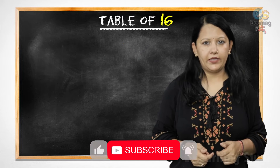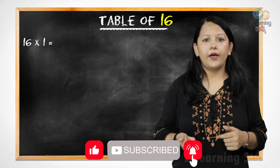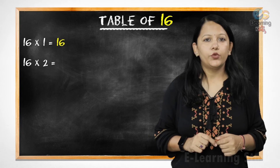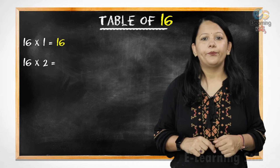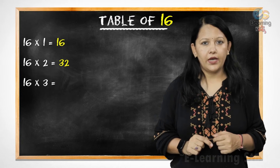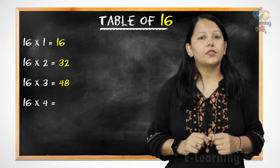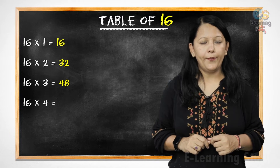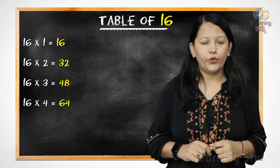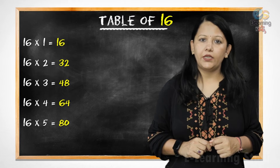Now let's revise it. 16 1s are 16, 16 2s are 32, 16 3s are 48, 16 4s are 64, 16 5s are 80,